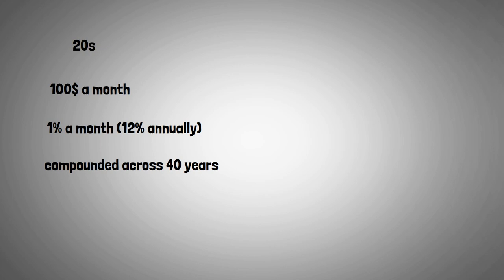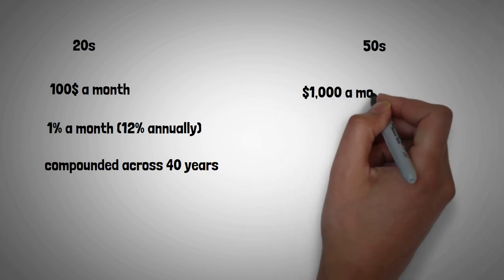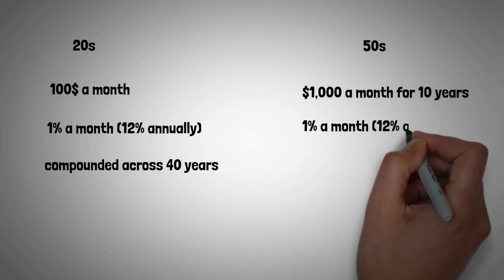Now let's imagine that your twin, who is the same age, doesn't begin investing until 30 years later. Your tardy sibling invests $1,000 a month for 10 years, averaging the same positive return.